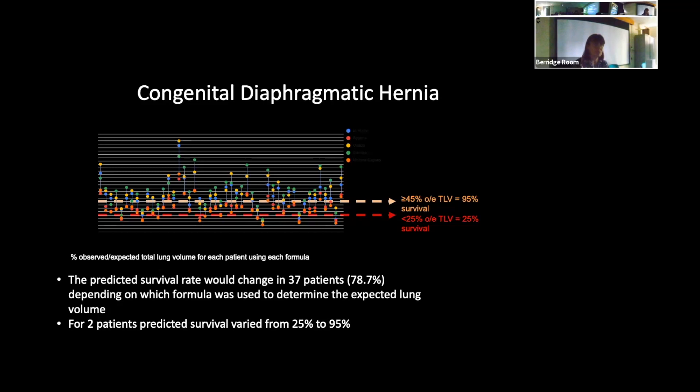We took our own data and we plugged in all those equations. Each of these set of four to five different colors is an individual patient with the data plugged into the different equations. So the yellow line is the 45% cutoff. So above that line, you predict a 95% survival. Below the red line, you predict less than 25% survival. And you can see just how many of those cases flicked into a different prognostic group, purely and simply on which equation you chose to use. We have no control over what anybody's doing. This is frightening. And particularly that two patients actually went from 25% to 95% survival.